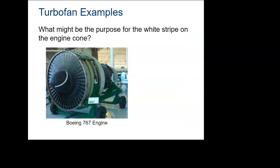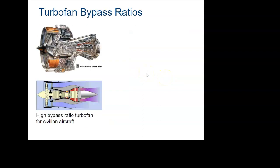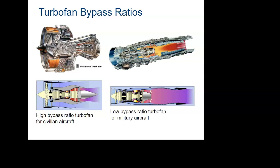Here are some examples. On a 767, there's a white stripe on the engine — if you see that spinning, it's hard to tell how fast it's moving, so it gives an indication of RPMs. Comparing high bypass commercial turbofans to low bypass military turbofans: the commercial engine has no afterburner — fan, compressor, burner, expansion. The military version has bypass, compressor, burner, turbine, and then an afterburner.